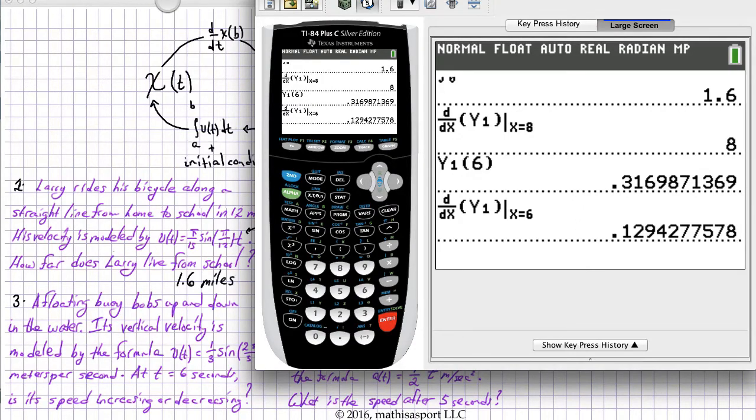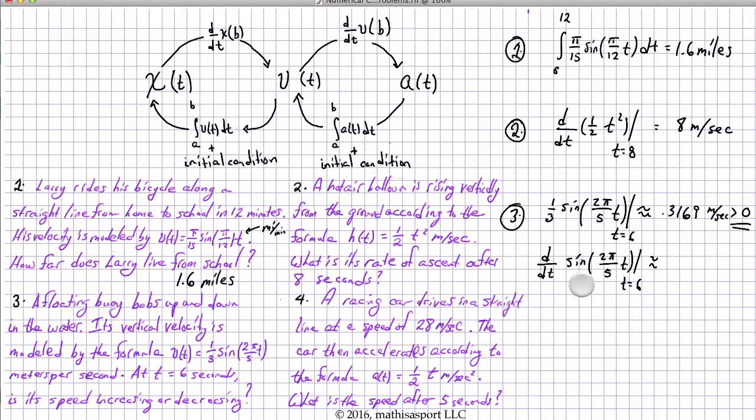It's also positive. 0.1294, we'll just write that down. And those units are meters per second squared. And that's also greater than zero. So, since the velocity and the acceleration are both positive, we can conclude that the speed is increasing.